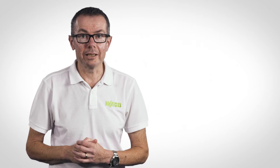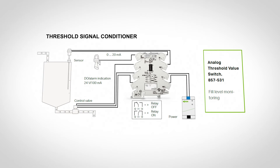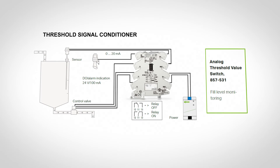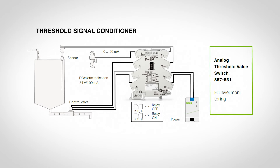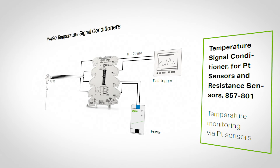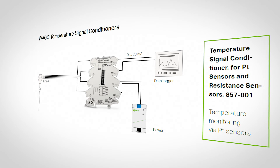Threshold value switches: these are essentially like a regular thermostat but are much more accurate, with either very low or adjustable hysteresis. The medium being measured can be any metric, as they accept voltage or current loop analog signals, or can accept directly temperature measurements using RTDs or thermistors.